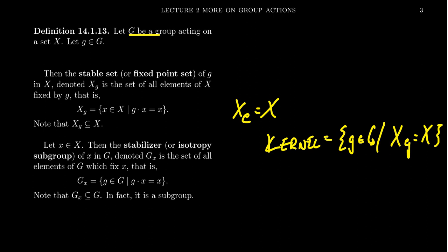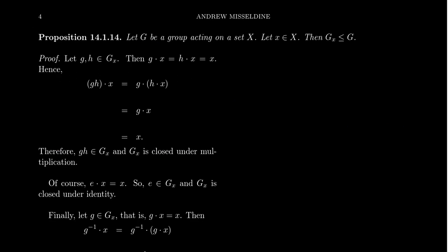Why are stabilizers sometimes called isotropy subgroups? Because they're subgroups — that's the proposition we're going to prove right now. If you have a group G that acts upon a set X and you pick any element x inside of X, then the stabilizer G sub x is in fact a subgroup of G, and therefore deserves the name isotropy subgroup. To prove that G sub x is a subgroup, there are basically three things we have to check: it's closed under multiplication, closed under the identity, and closed under inverses.